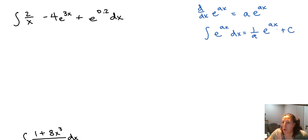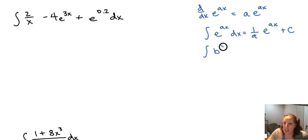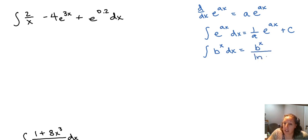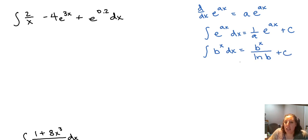The reason for plus C is that going backwards we don't know whether or not there is a constant there. If we have something that does not have e as the base — something in the form of b to the ax — then the antiderivative is going to be b to the x divided by the natural log of b.